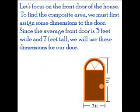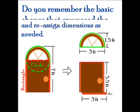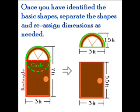Let's focus on the front door of the house. To find the composite area, we must first assign some dimensions to the door. Since the average front door is 3 feet wide and 7 feet tall, we will use these dimensions for our door. Do you remember the basic shapes that compose the door? Once you have identified the basic shapes, separate the shapes and reassign dimensions as needed.